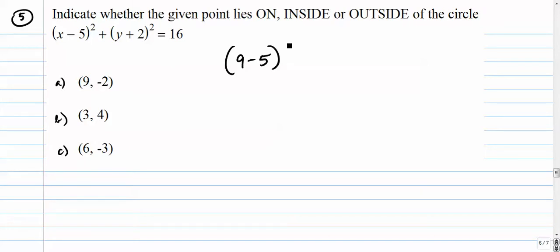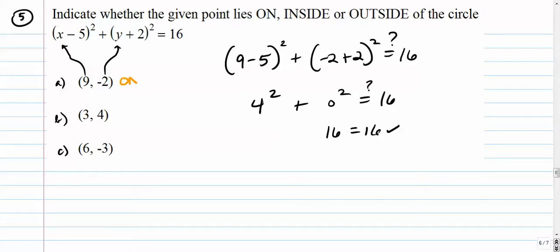What we're doing here is we're checking that point into the x and this into the y. And we're going to see if it works. 4 squared plus 0 squared. Does that equal 16? 16 definitely equals 16. When it does, that means that point lies on the circle.